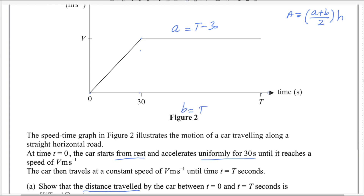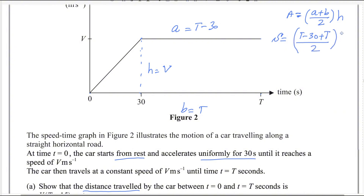Here, b equals t because the length from here to here is t. And this length — let's call that 'a' — equals t minus 30 because here it is 30. So if you subtract 30 from t, you will get this length. And the height here equals v, since height is the perpendicular distance between the two parallel sides. Now plug in the values: distance equals area of trapezium, which is (t minus 30 plus t) divided by 2, multiplied by v.